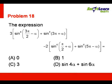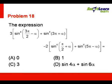Problem number 18. The expression 3 into sin power 4 of (3π/2 − α) plus sin power 4 of (3π + α) minus 2 times sin power 6 of (π/2 + α) plus sin power 6 of (5π − α) is equal to either 0, 1, 3, or sin 4α + sin 6α.